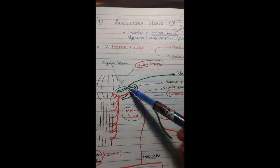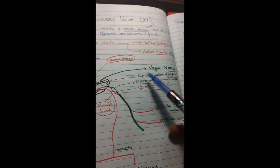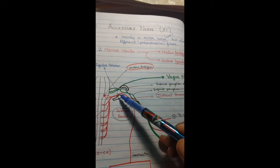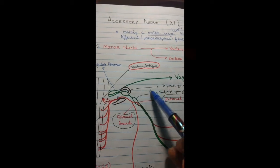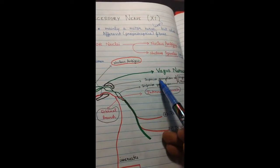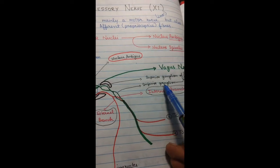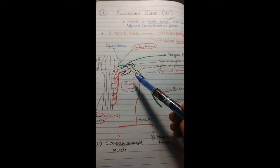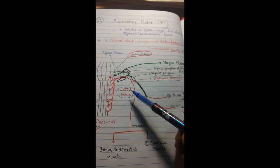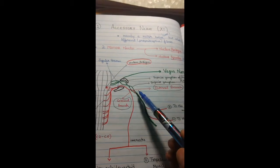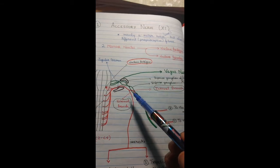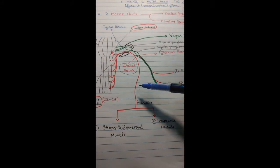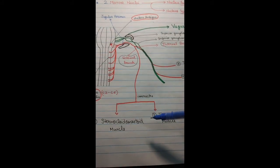The accessory nerve leaves the cranial cavity through the jugular foramen alongside the vagus nerve, shown in green. Here I have drawn two structures: the superior ganglion and the inferior ganglion of the vagus nerve. After leaving the cranial cavity, the accessory nerve divides into two branches — the external branch, going downwards, and the internal branch.